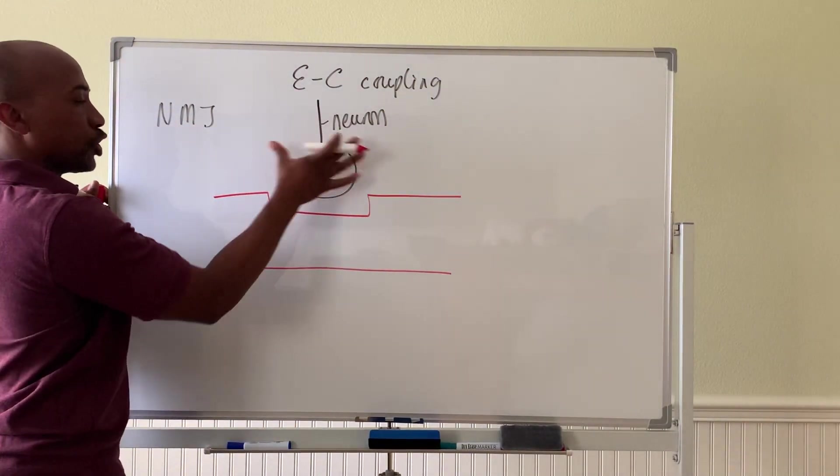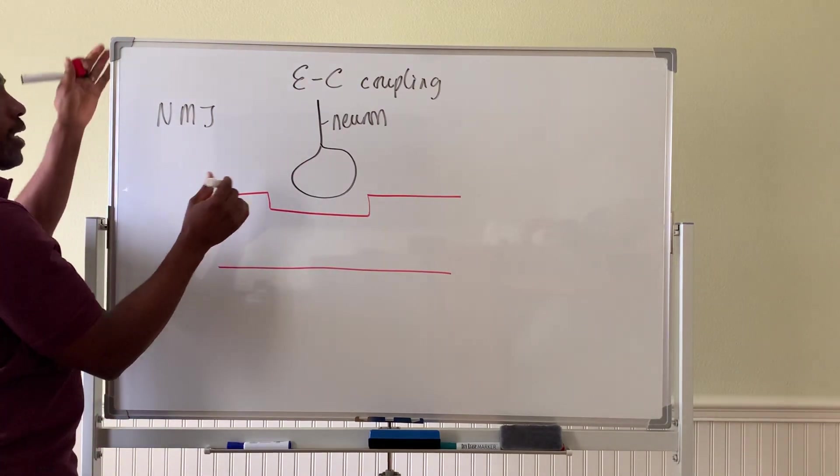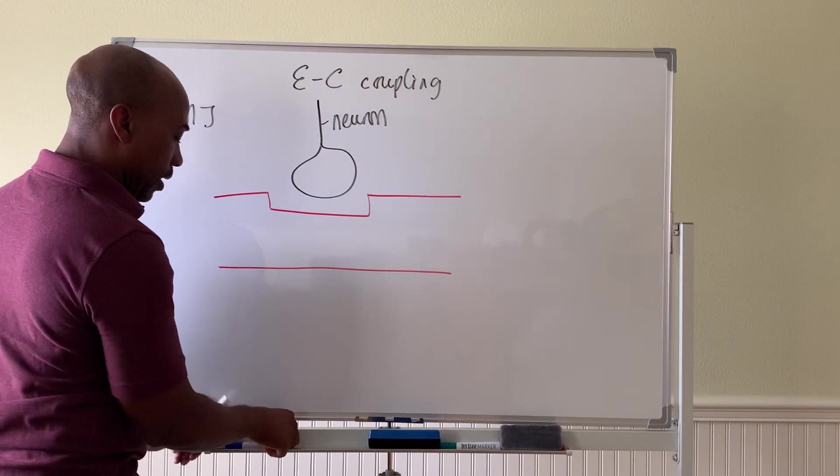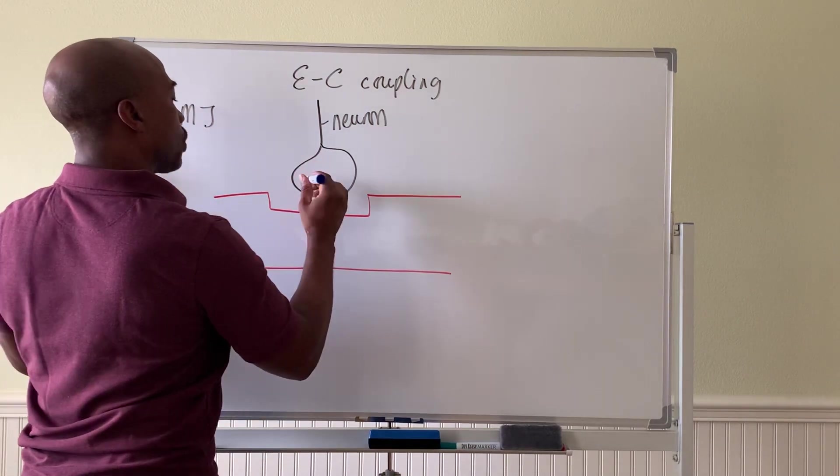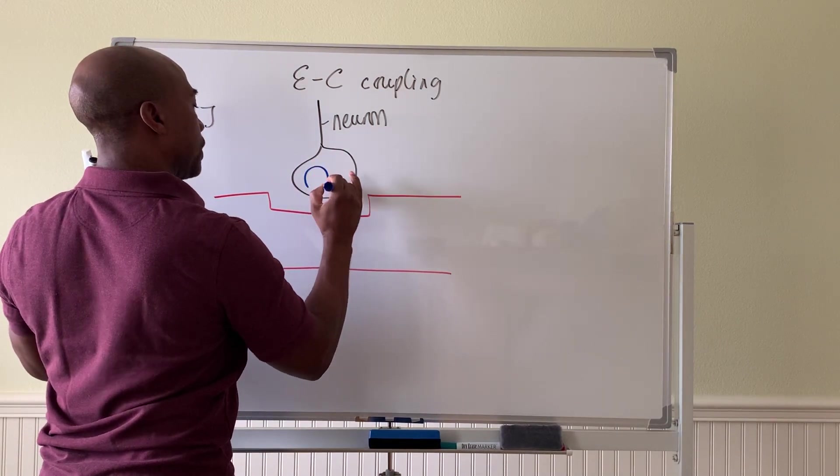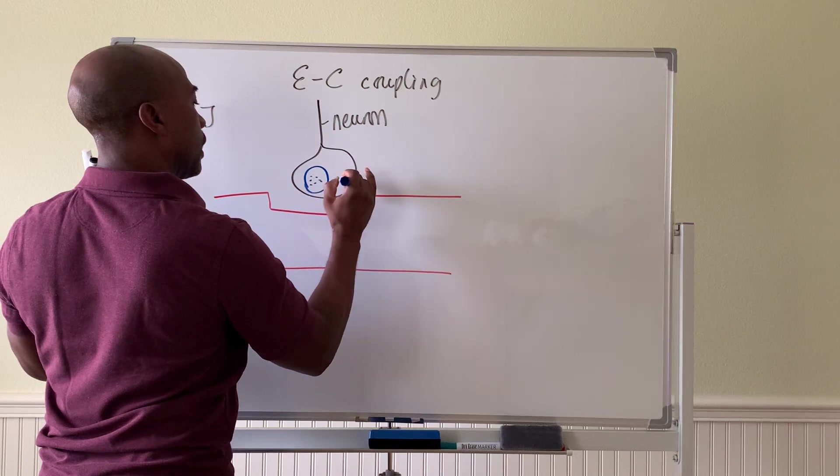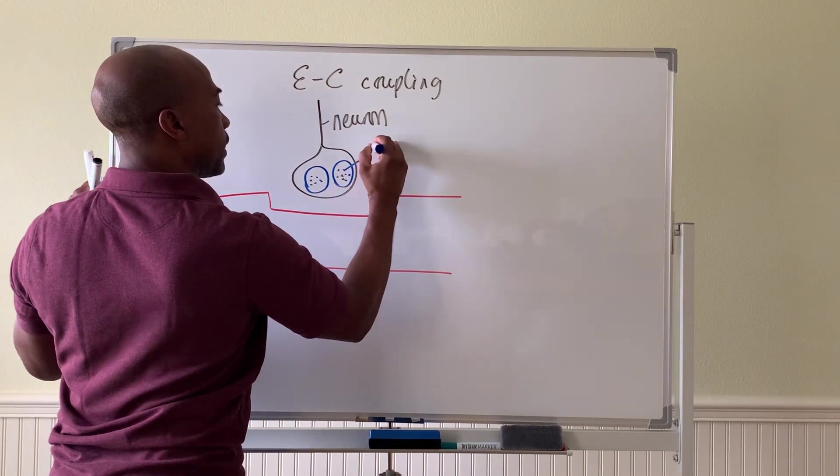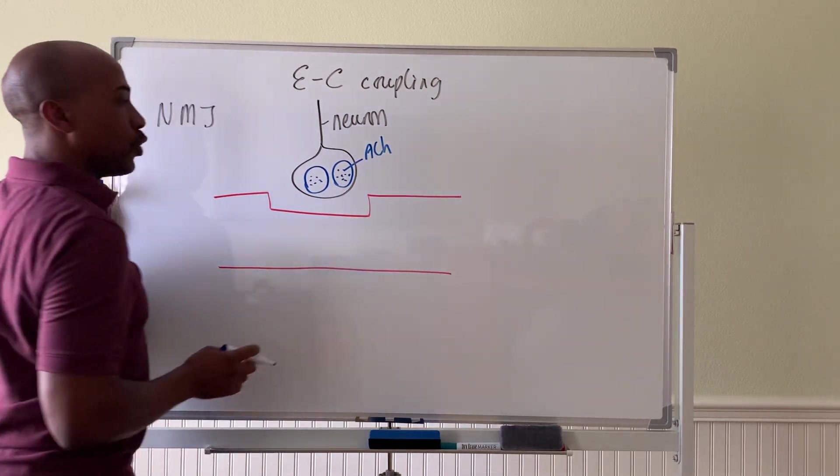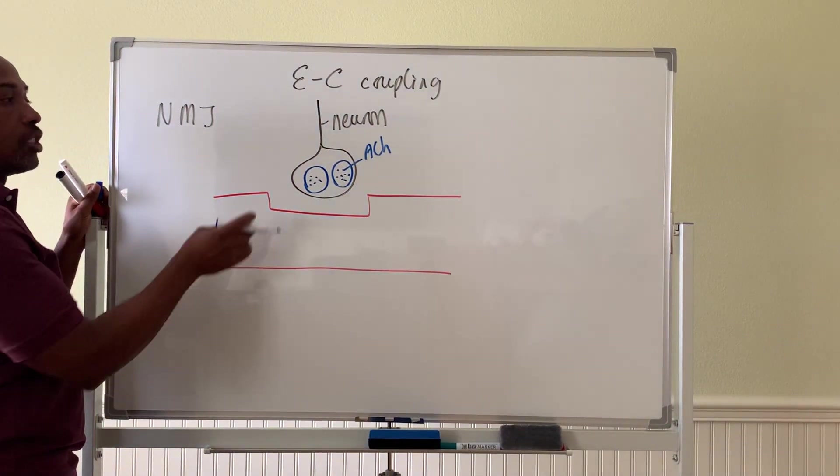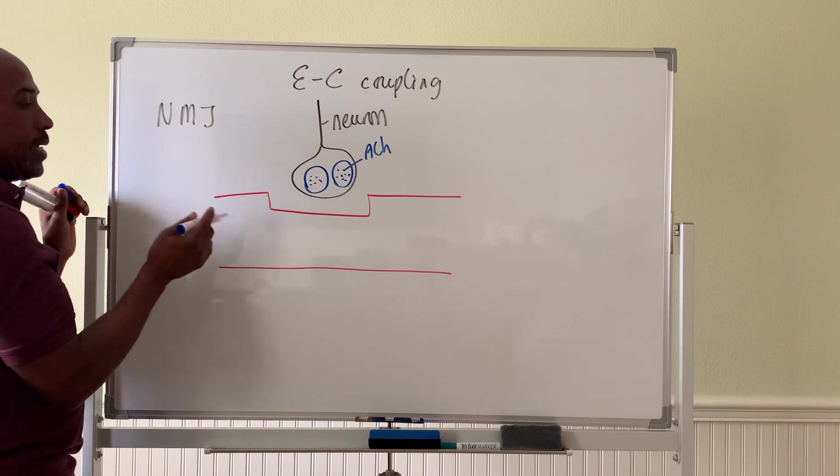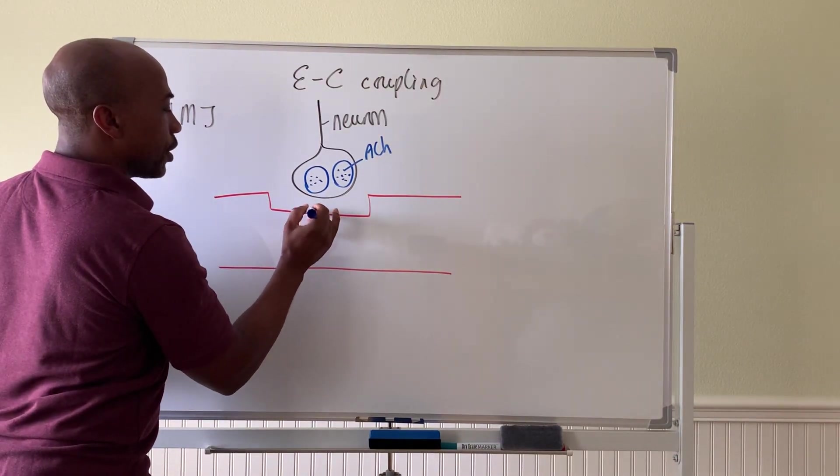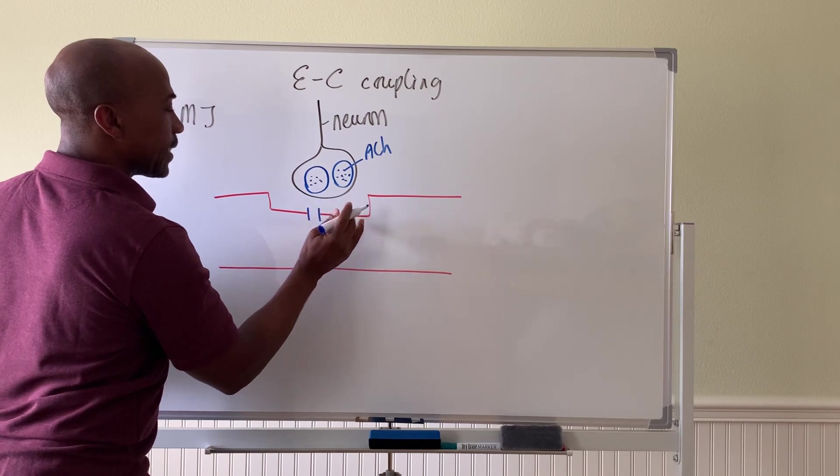So here in the neuron, of course, you have your typical NT. It's always ACH—acetylcholine is the neurotransmitter that's stored in the knob of the motor neuron. Then on the muscle cells, you have your ligand-gated channels.